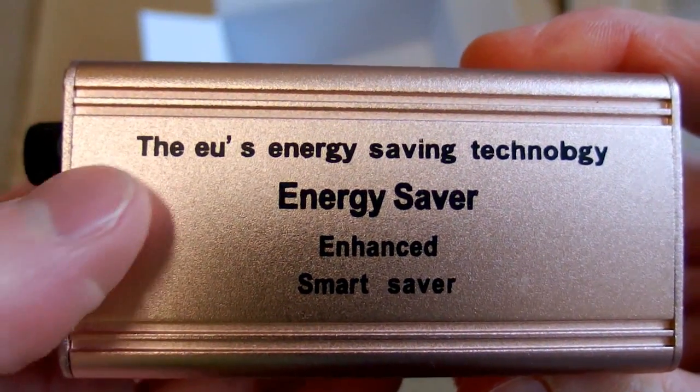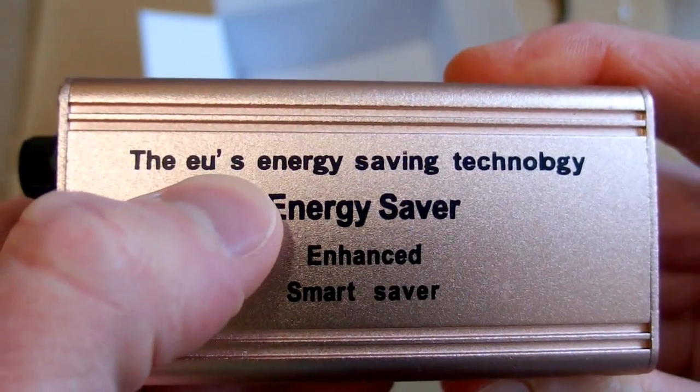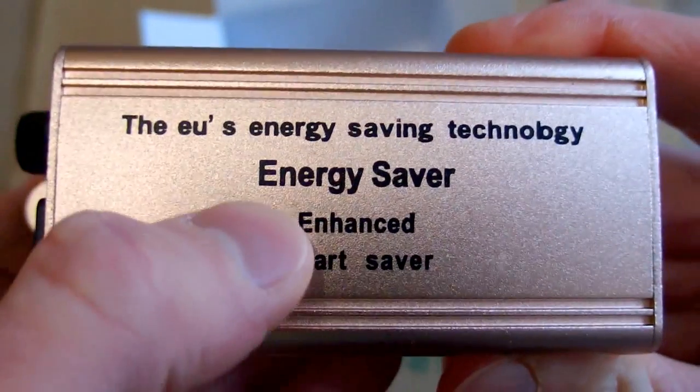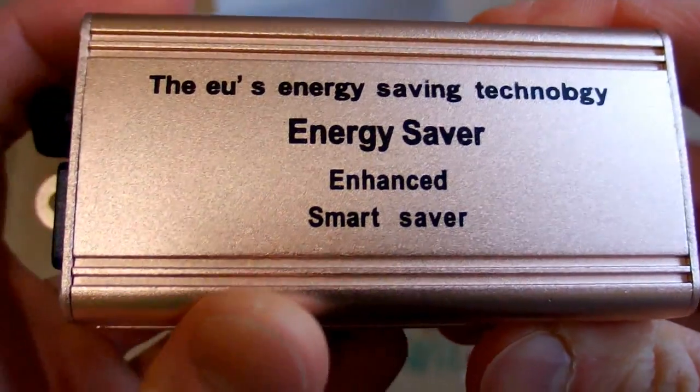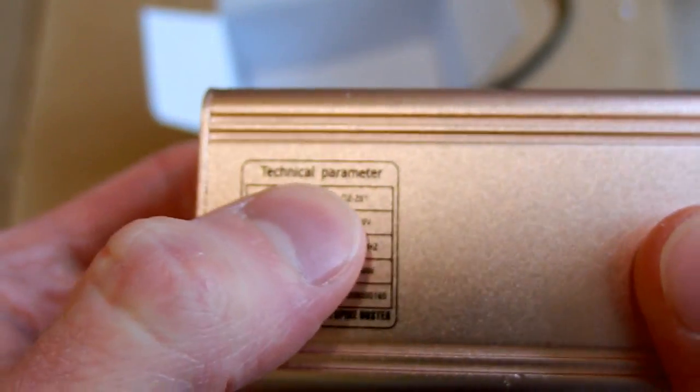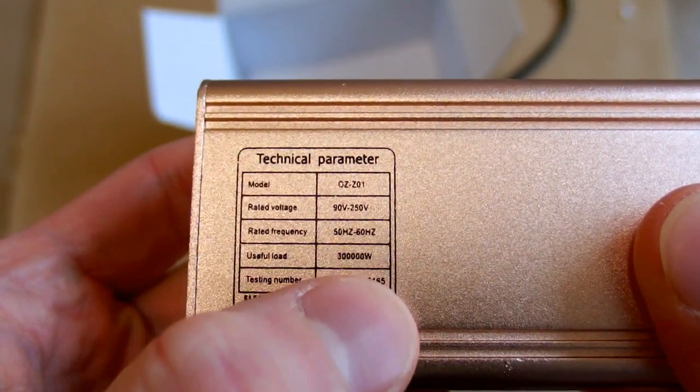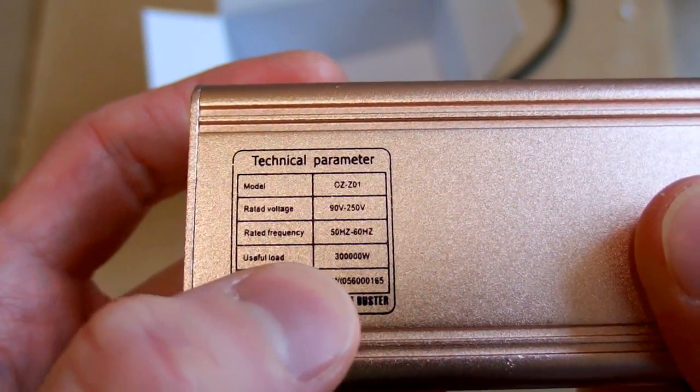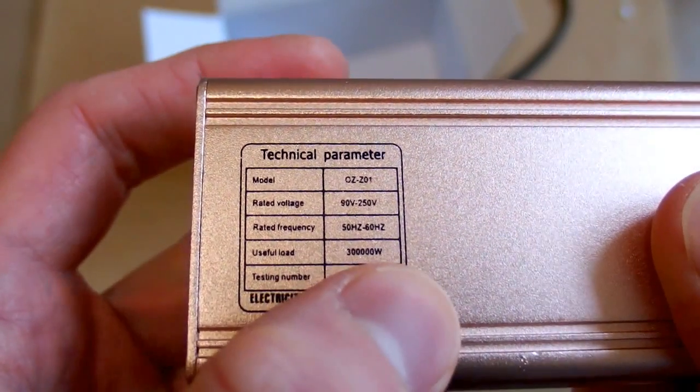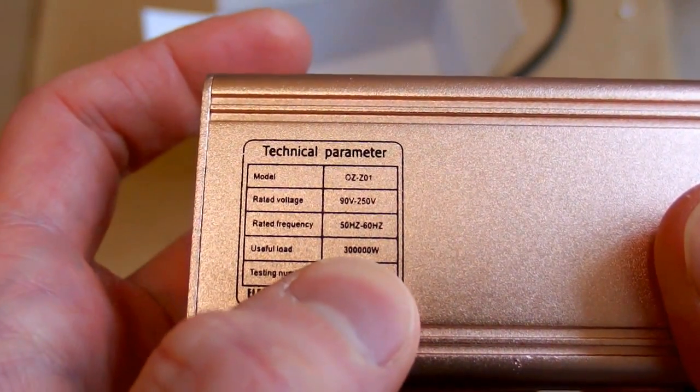It says DEU's energy saving technology, energy saver, enhanced smart saver. On the other side there is some technical parameter, the rated voltage, frequency and useful load of 30 knots. It's 300,000 watts.